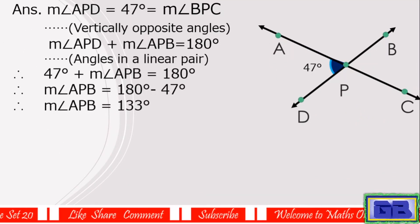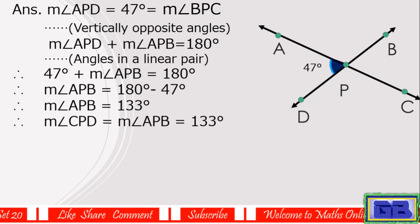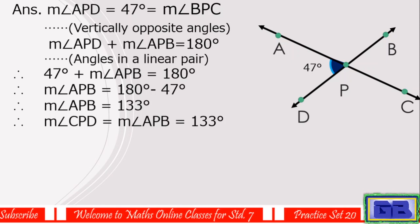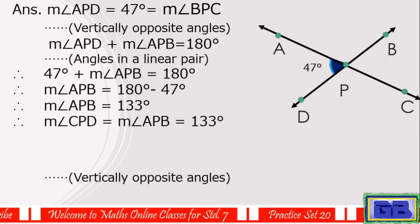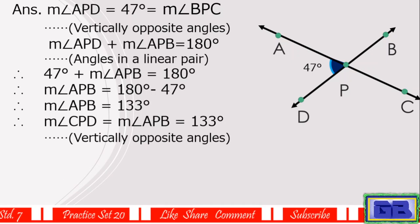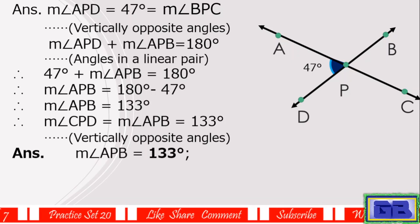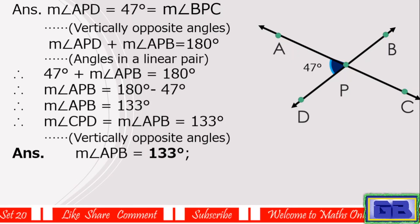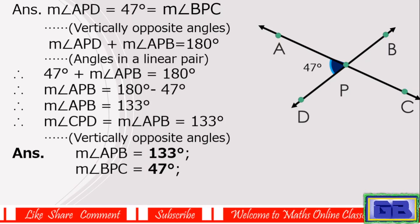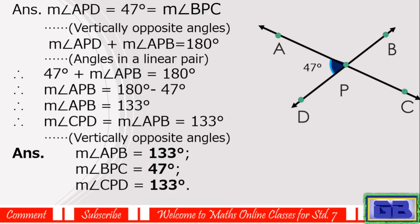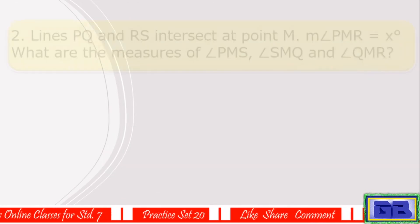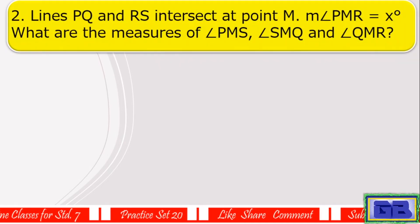Measure of angle APB equals 133 degrees, as these are vertically opposite angles. So the final answers are: measure of angle BPC equals 47 degrees and measure of angle CPD equals 133 degrees.